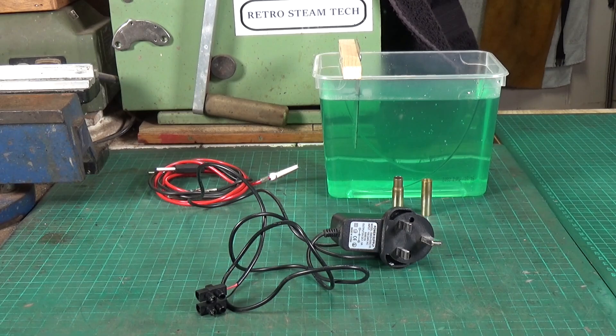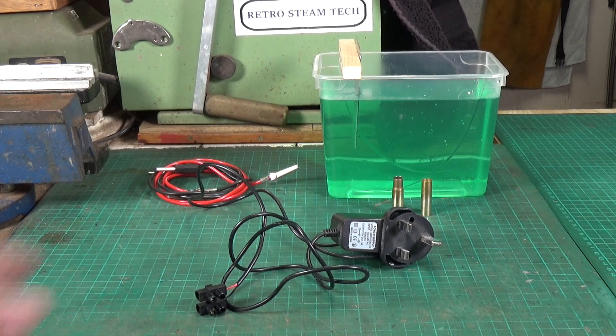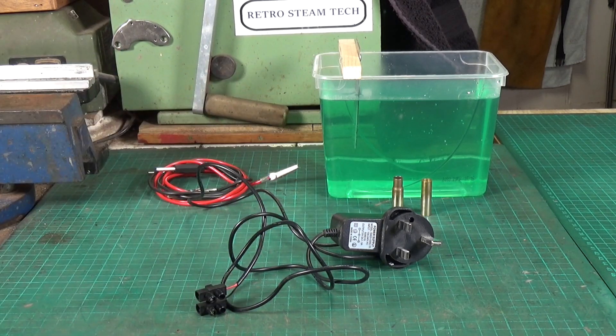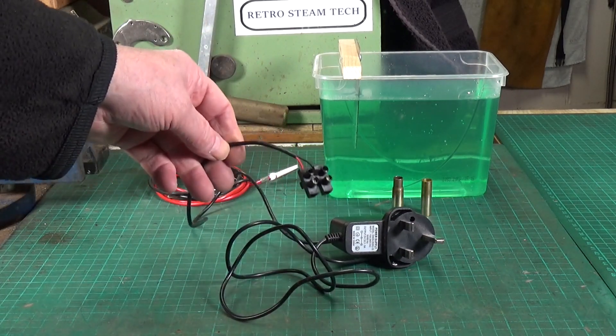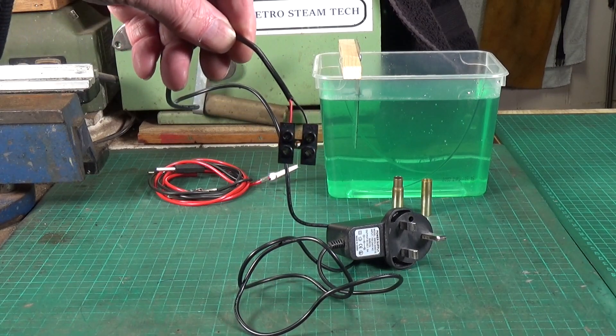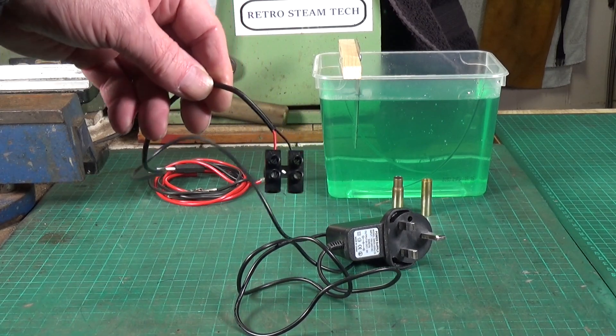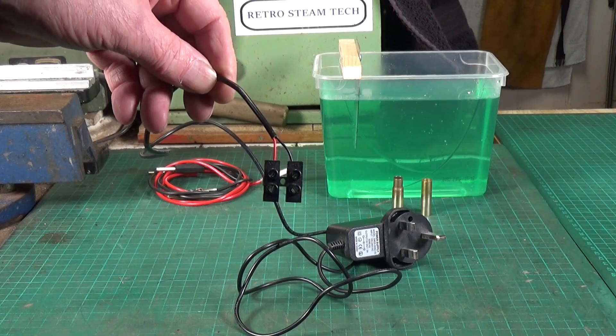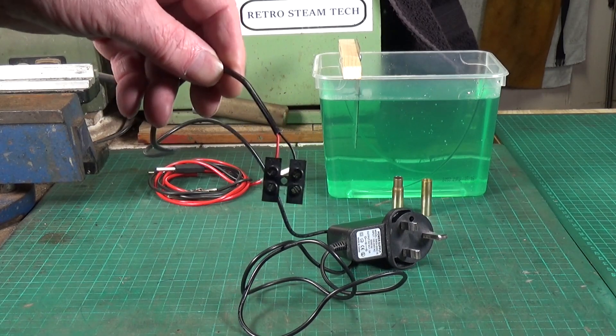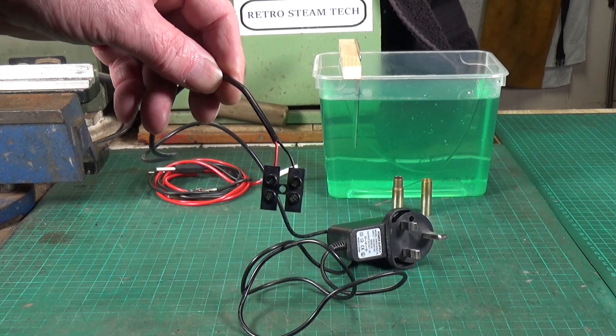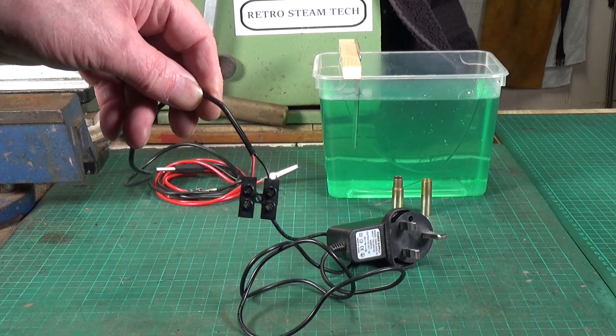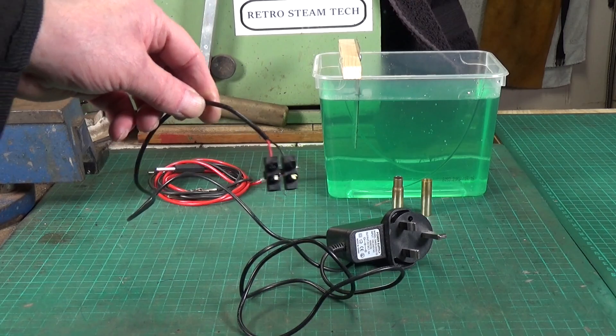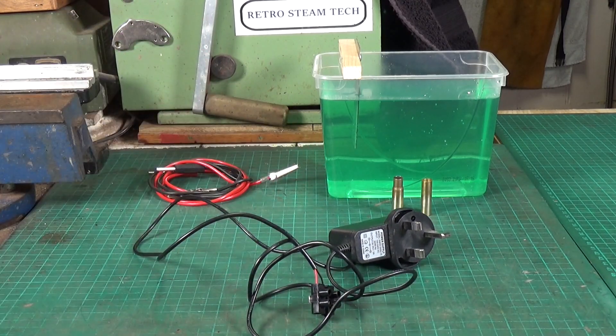Now obviously you do need to make sure you know which lead is positive and which is negative. Of course, the one mobile phone charger that I would pick actually has black and red leads. Most of them don't, so you need to use a multimeter to determine which is positive and which is negative, because you have to connect the negative lead to whatever you want to nickel plate. So that's one solution.